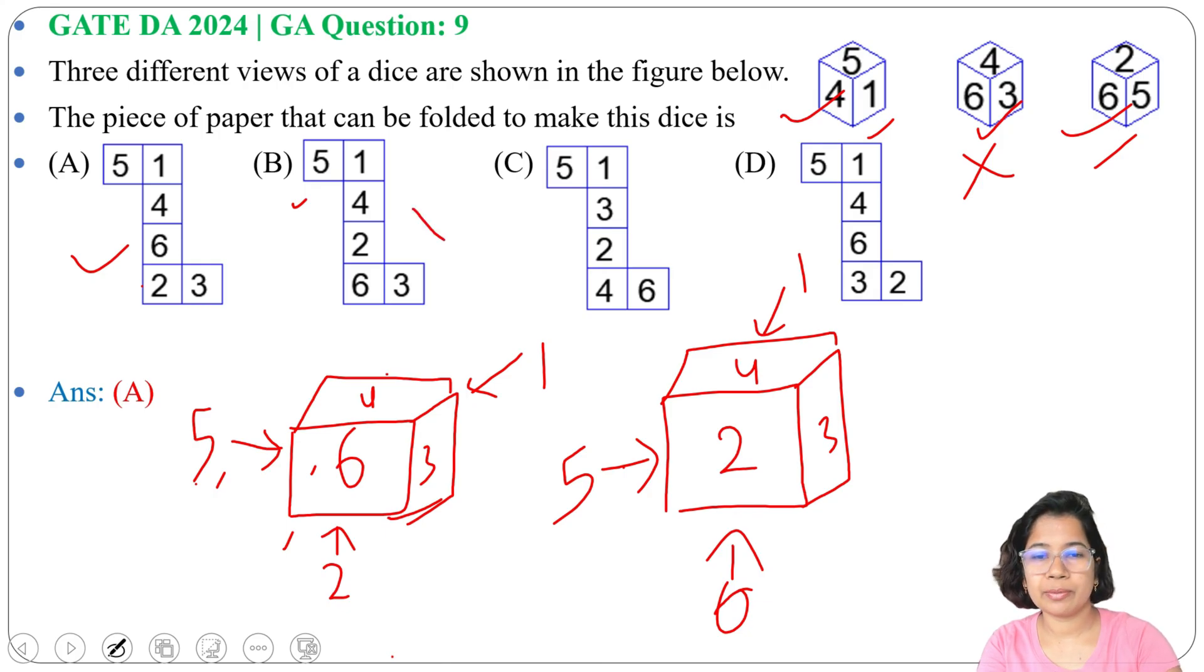2, 6, 5, this is possible. So as this 4, 6, 3 is not possible, so option B is wrong. So like this you can check option C is also wrong, option D is also wrong. So answer will be option A. You can easily create the dice and you can easily check whether these faces are possible or not.